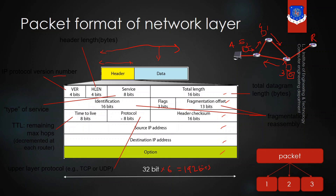The protocol field tells what type of protocol the upper layer is using — it can be TCP or UDP. The header checksum is for error detection. The source IP is the IP address of the sender, the destination IP is the IP address of the receiver, and the option field is an extra field. So this is the introduction to the network layer — thank you so much.